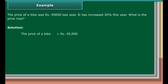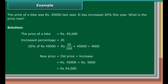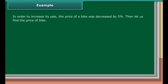Example: The price of a bike was rupees 45,000 last year. It has increased 20% this year. What is the price now? Solution: The price of the bike is rupees 45,000. Increased percentage is 20. 20% of 45,000 equals rupees 20 upon 100 into 45,000, which is equal to rupees 9,000. New price equals old price plus increase, which is equal to rupees 45,000 plus rupees 9,000, which is equal to rupees 54,000.